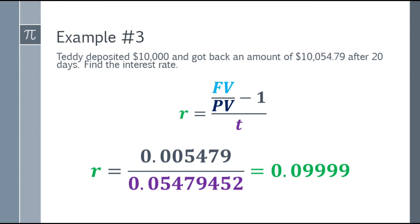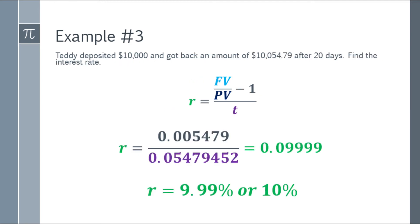We multiply it by 100 and add the percent sign. That will be 9.99%, or we can estimate that to be 10%. So Teddy deposited $10,000 and after 20 days it became 10,054.79, the interest rate of the bank is 10%.